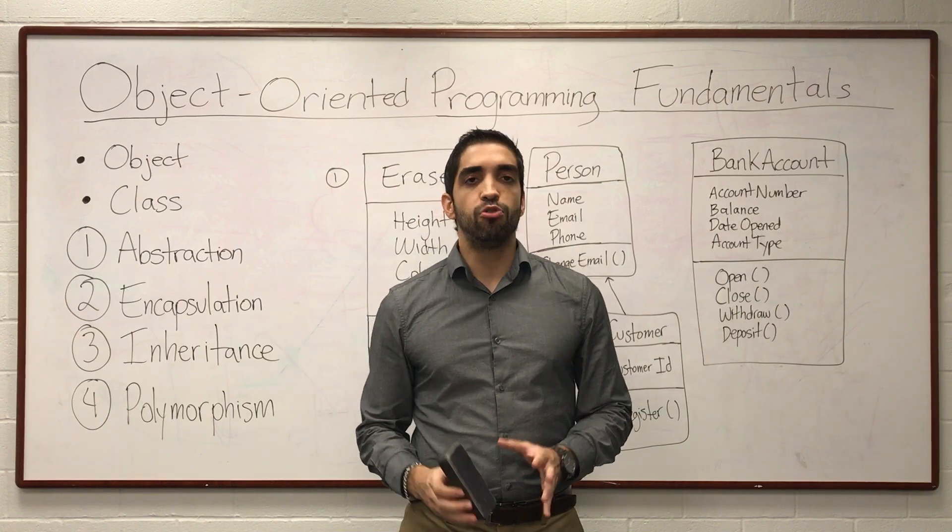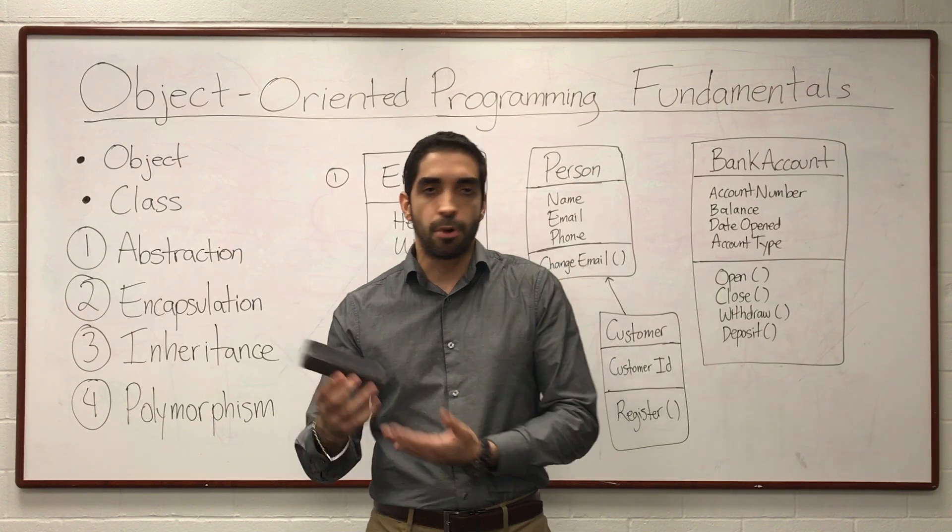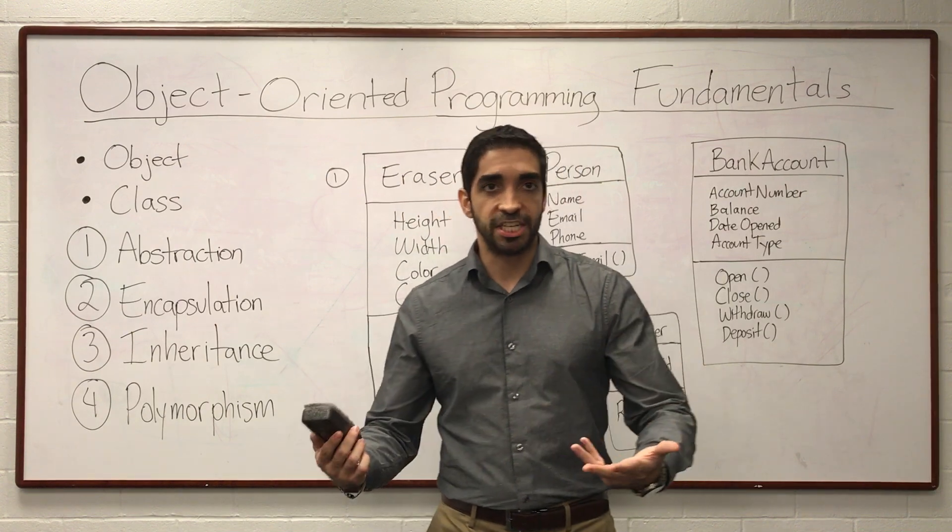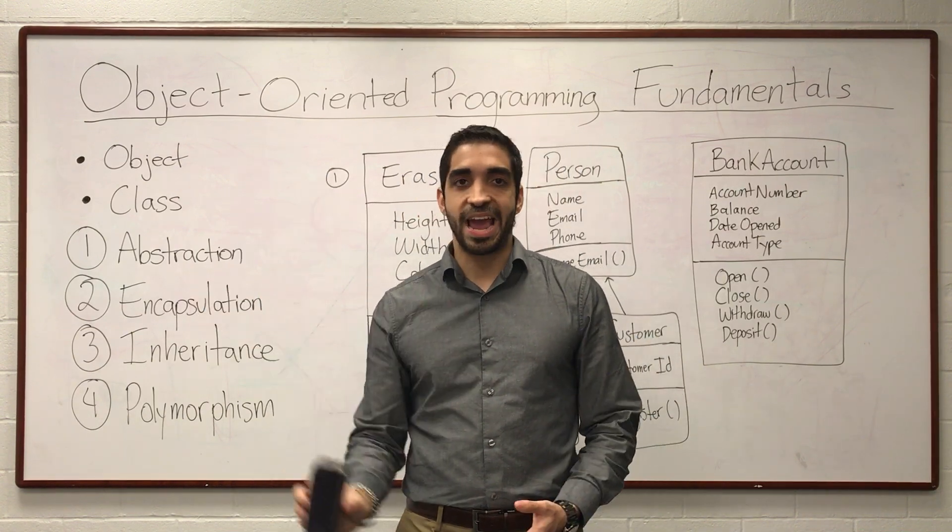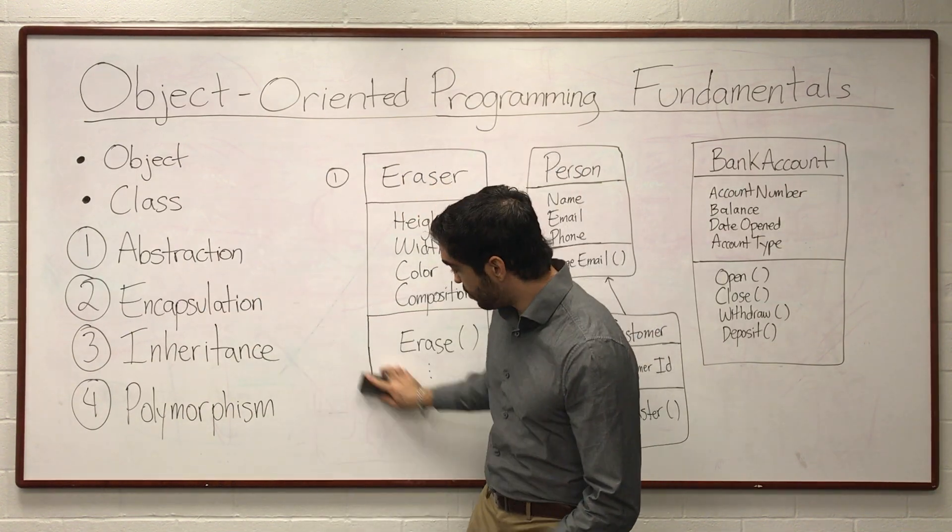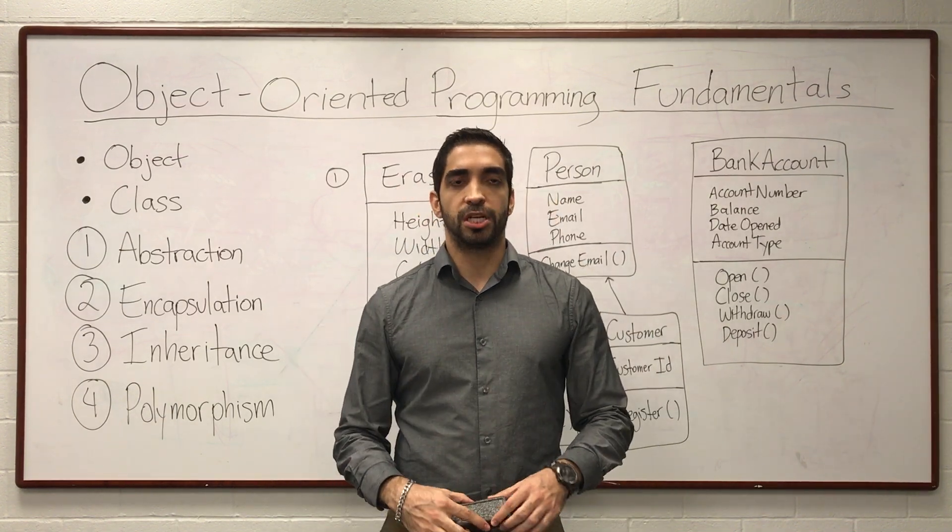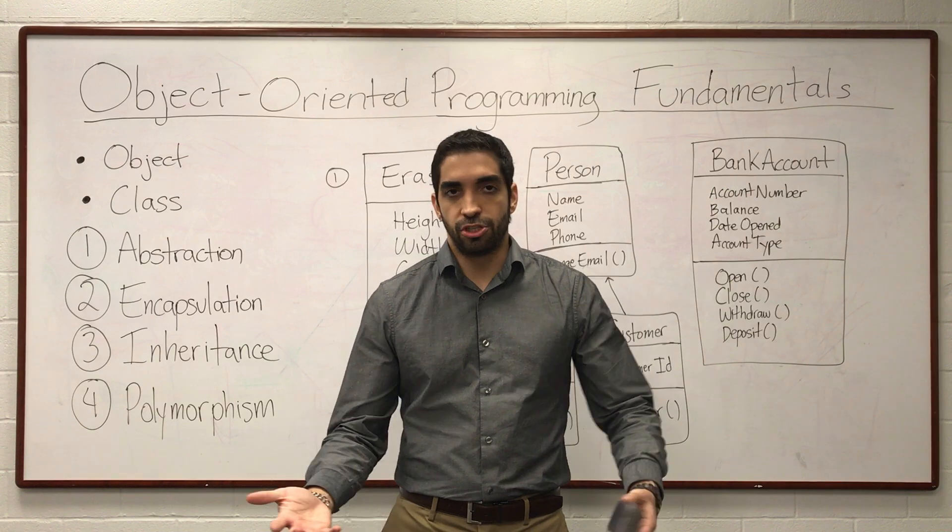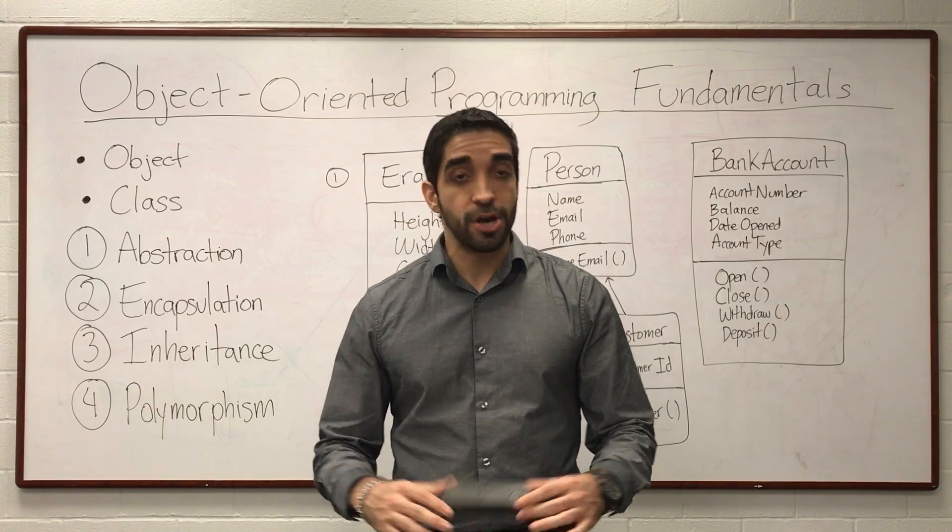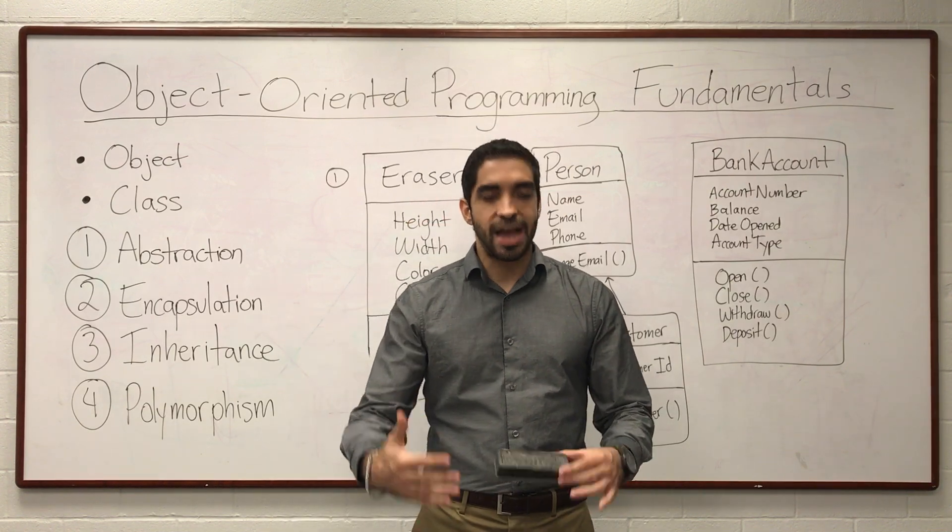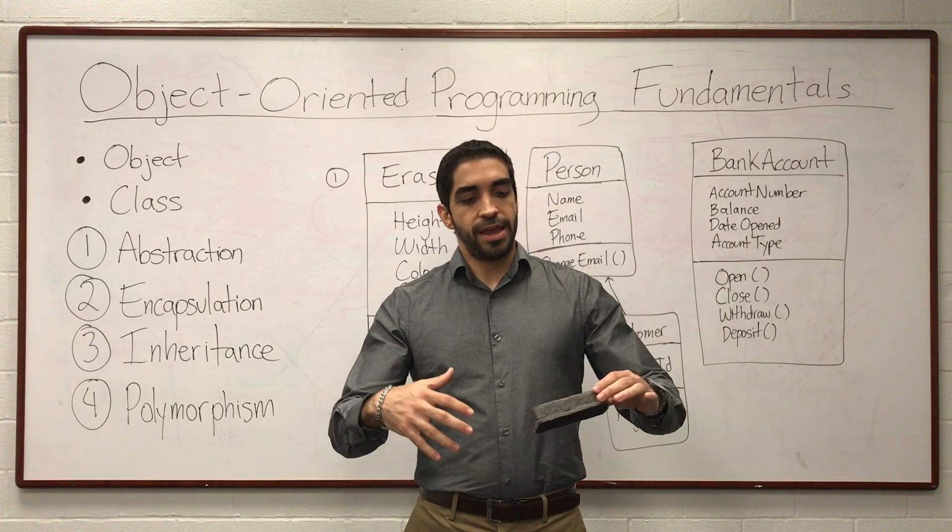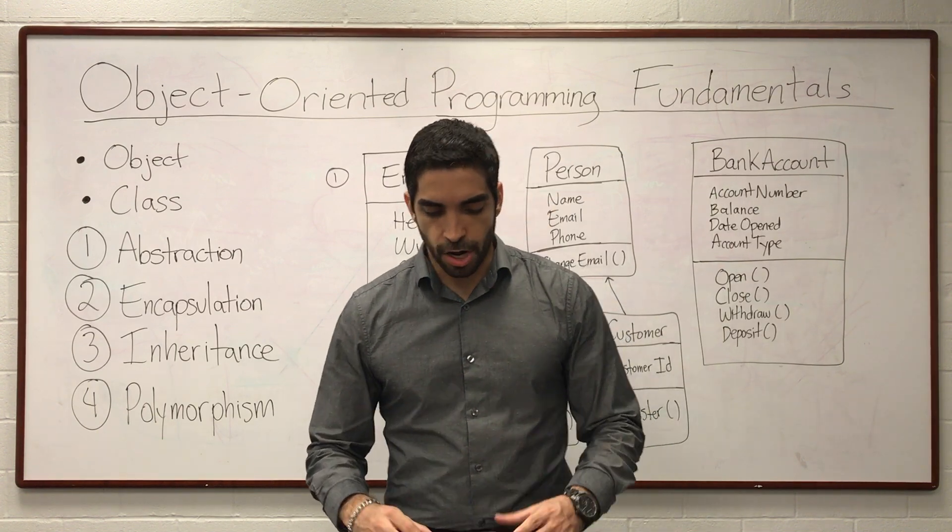There's also specific things that it can do. This eraser object can do very specific things. The most obvious one would be to erase. So an eraser can erase. We call the behaviors, the methods. So an object is a thing that has specific properties and methods. That's what an object is.